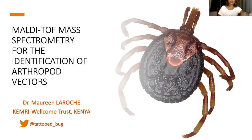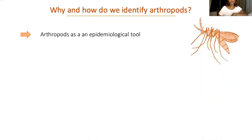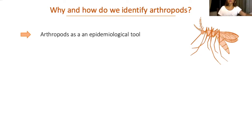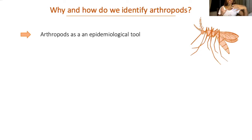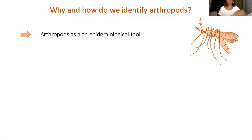We want to identify arthropods because some are able to transmit pathogens, provoking what we call vector-borne diseases. It's important to know if we're dealing with one of these vector species or not. Vector transmission is a very active process — it's not a syringe. A blood-sucking bug takes infected blood and there are very specific interactions happening between the pathogen and its vector, resulting in quite specific host-vector couples. Knowing this, you can extrapolate from the distribution of a vector whether a particular vector-borne disease could occur in a given area. This is what I mean when I say arthropods are an epidemiological tool.